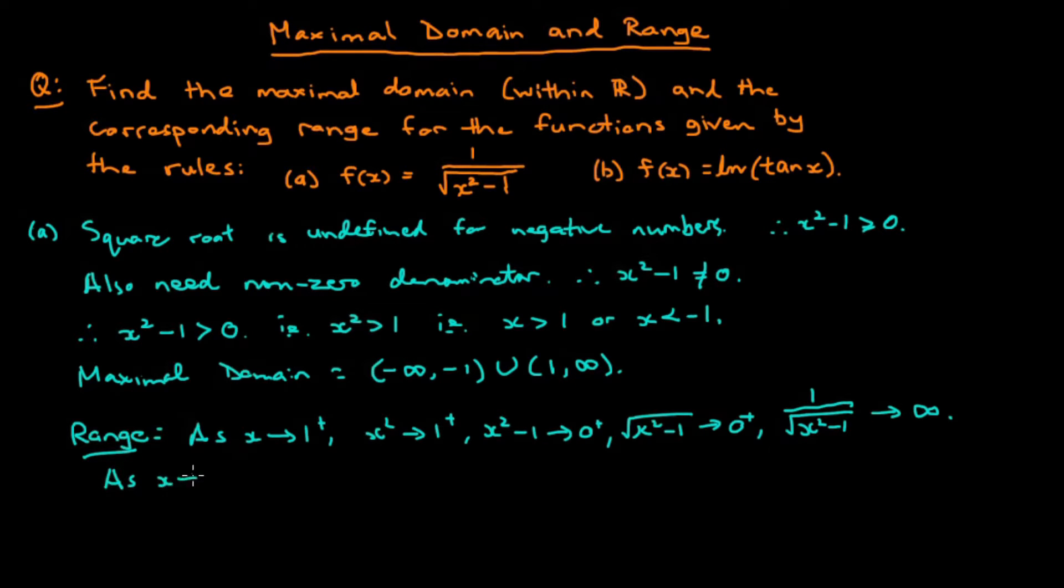As x approaches infinity, x squared approaches infinity, x squared minus 1 approaches infinity, square root of x squared minus 1 approaches infinity, and 1 over the square root of x squared minus 1 approaches 0 from above.